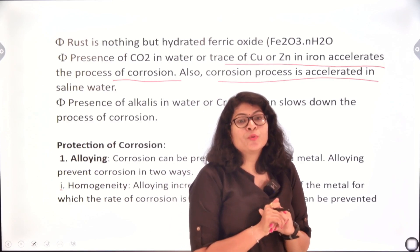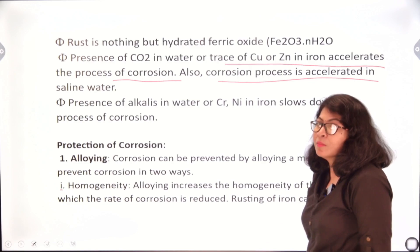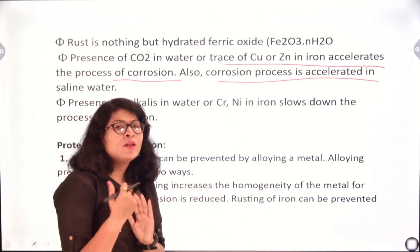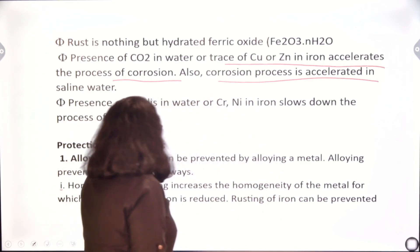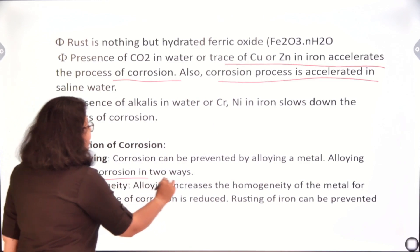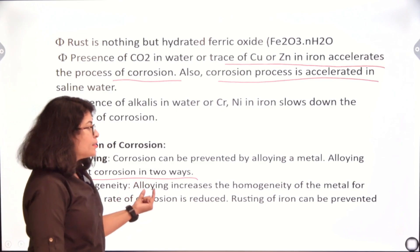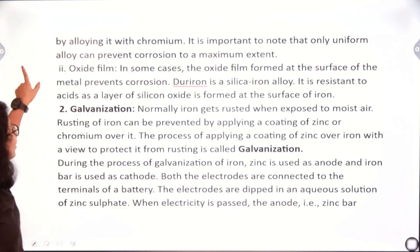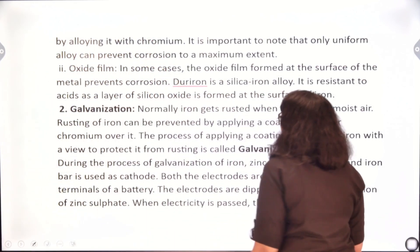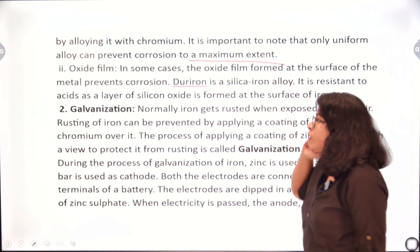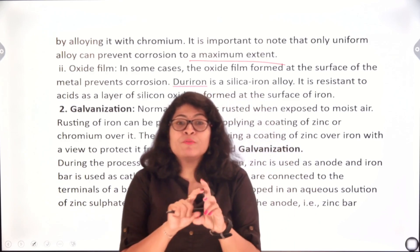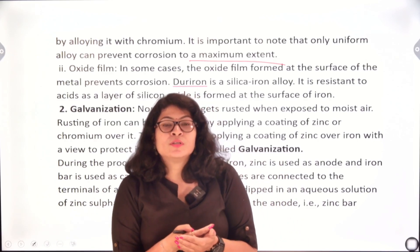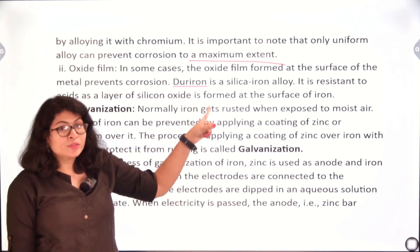Now, what are the ways devised to prevent corrosion? The first is alloying — combining iron with some other metals to form a mixture called an alloy, which comparatively takes a longer period to corrode. Alloying prevents corrosion in two ways. First is homogeneity: alloying increases the homogeneity of the metal, for which the rate of corrosion is reduced. Rusting can be prevented by alloying iron with chromium. Only a uniform alloy can prevent corrosion to a maximum extent, as uniform distribution reduces the effective surface area.